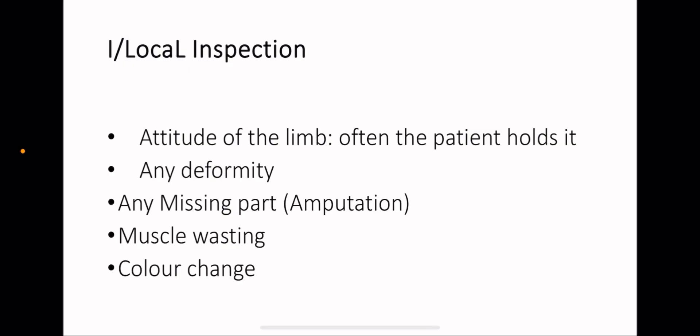After that you will do the local examination. Firstly, in the local examination 3A, we're going to start with the inspection. In the inspection, check for any deformity, any missing part which may indicate amputation, any muscle wasting or color changes.